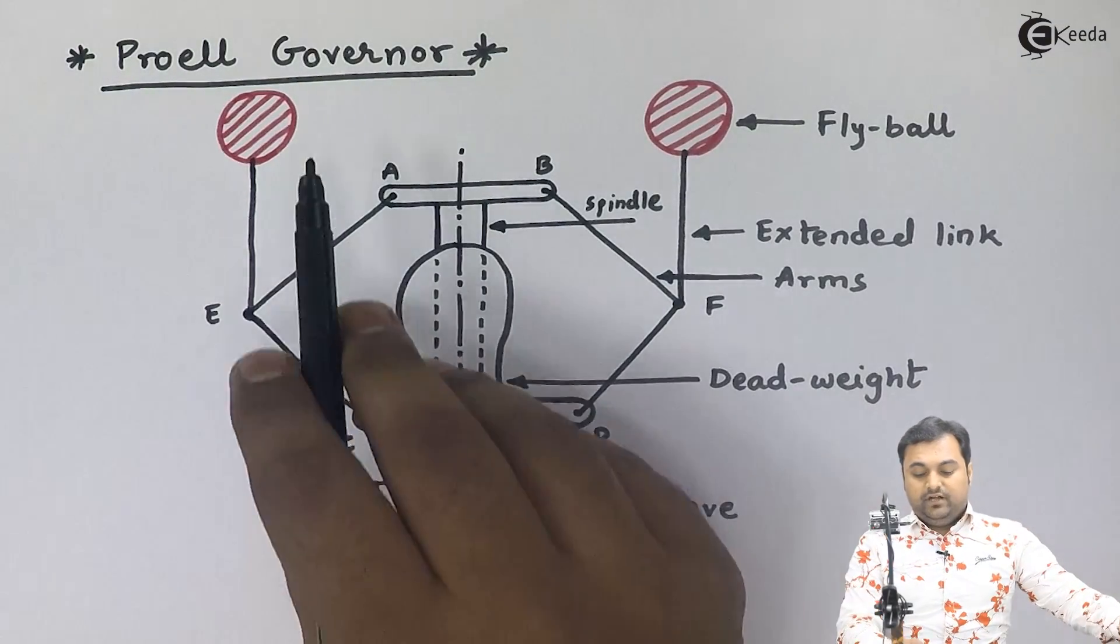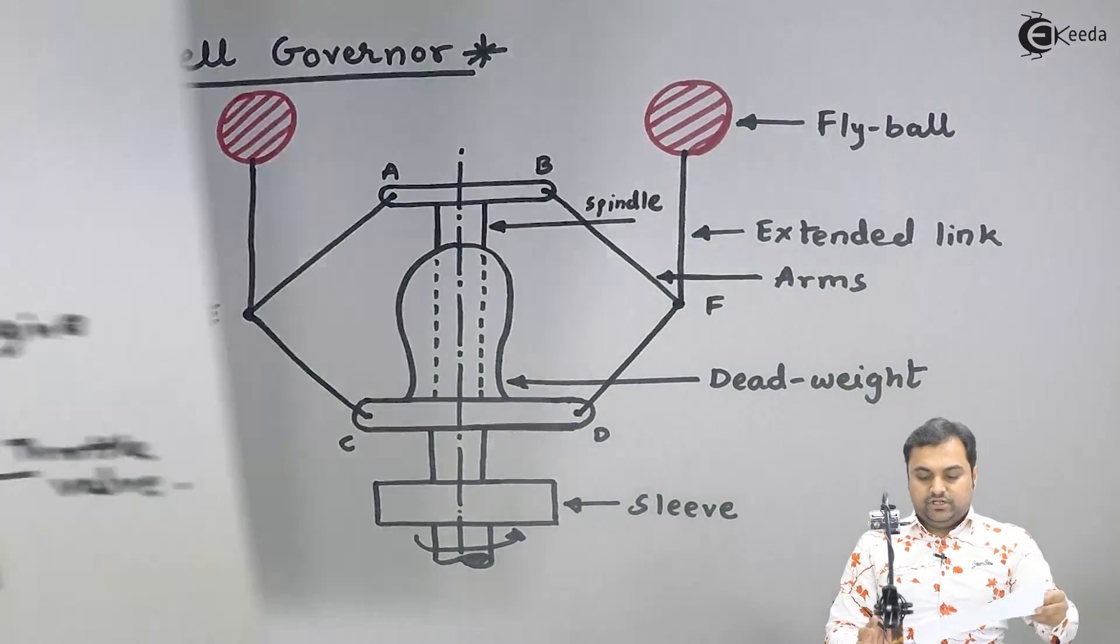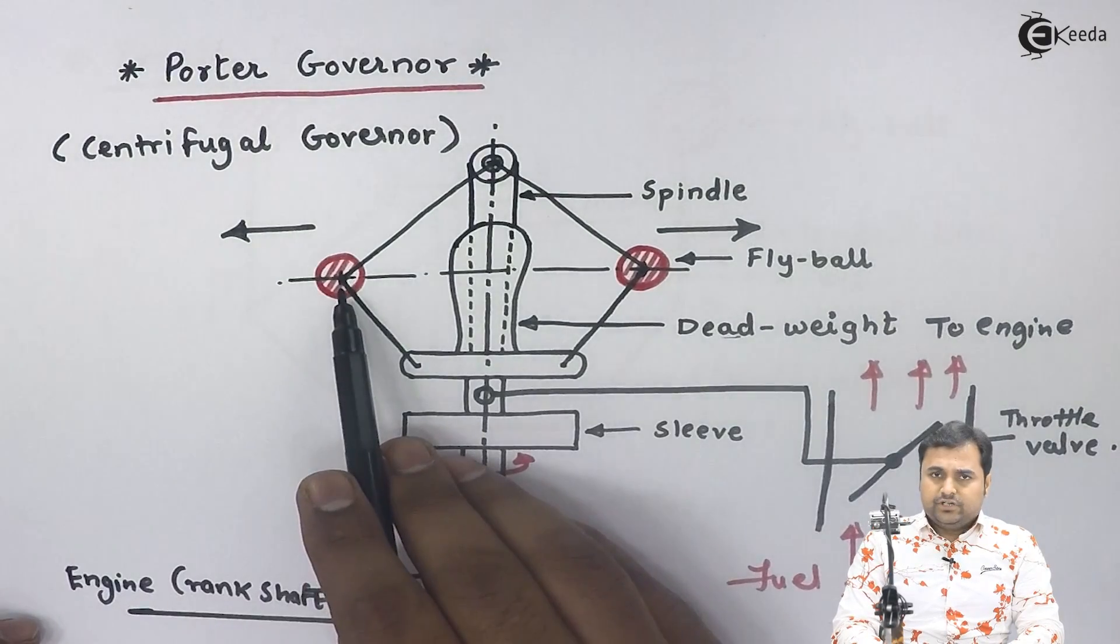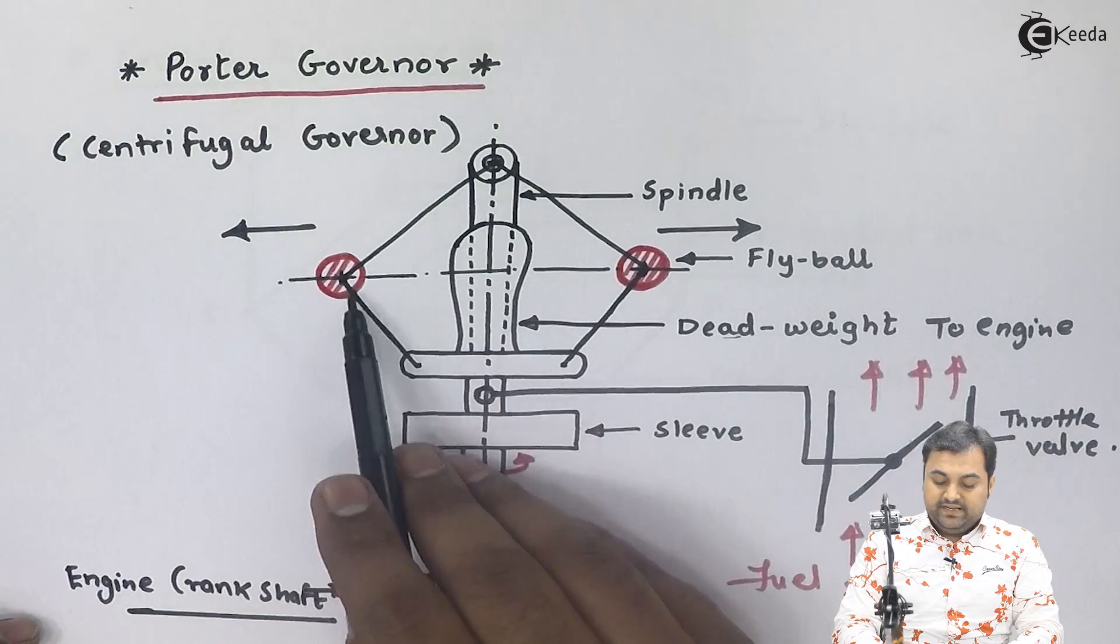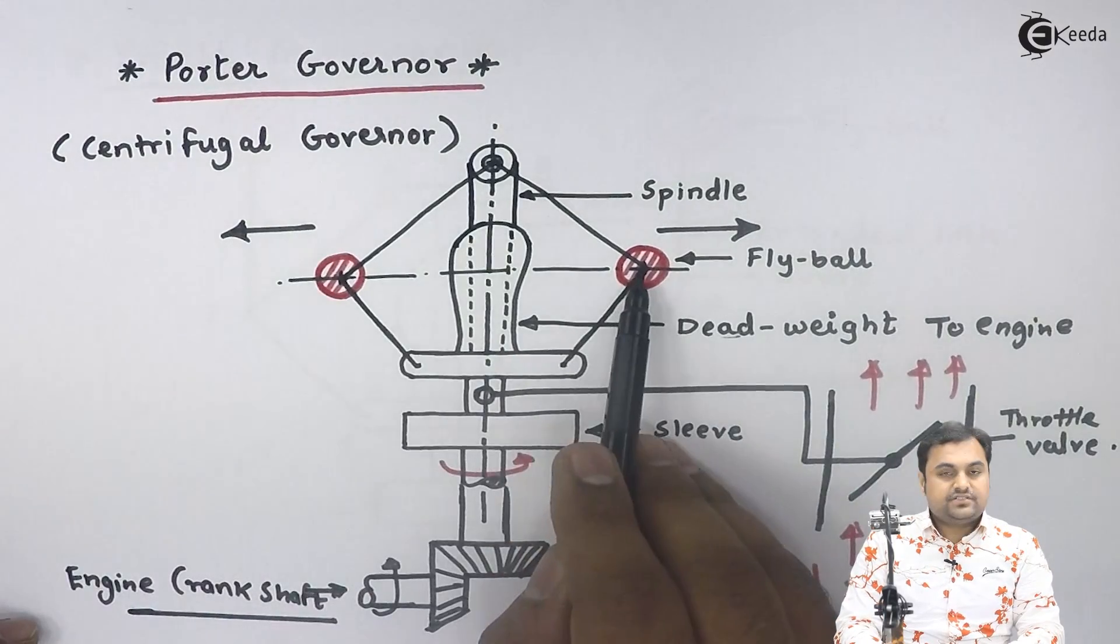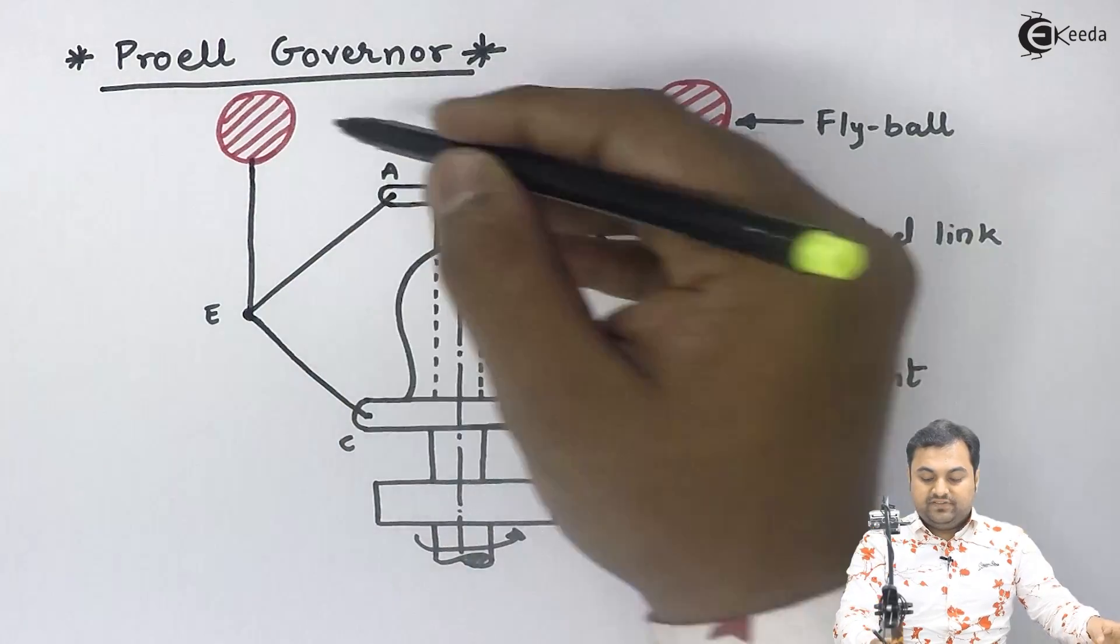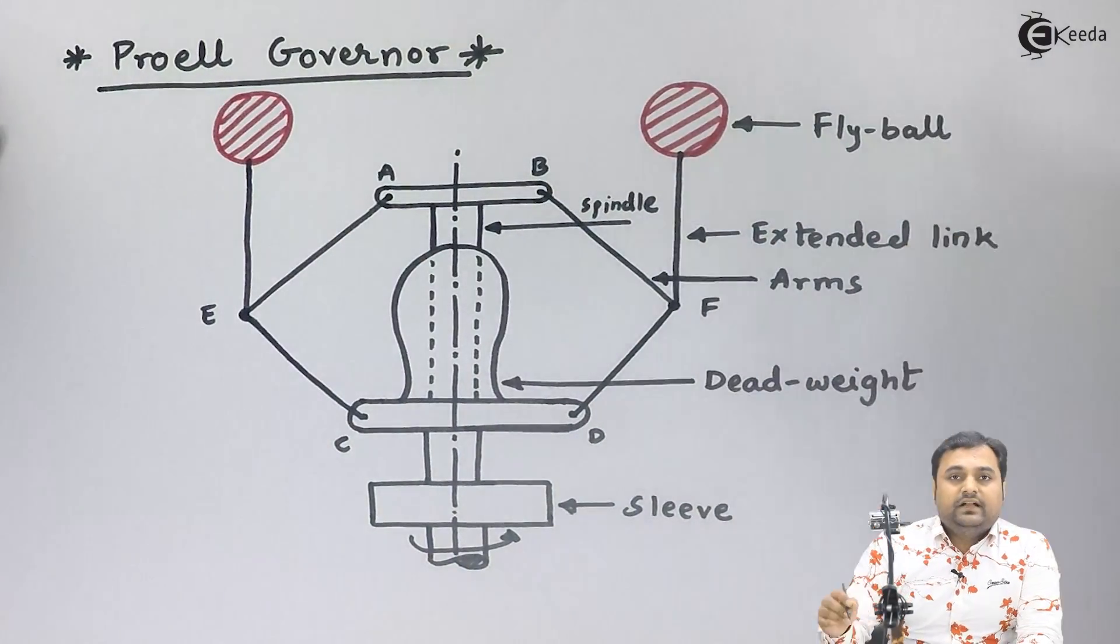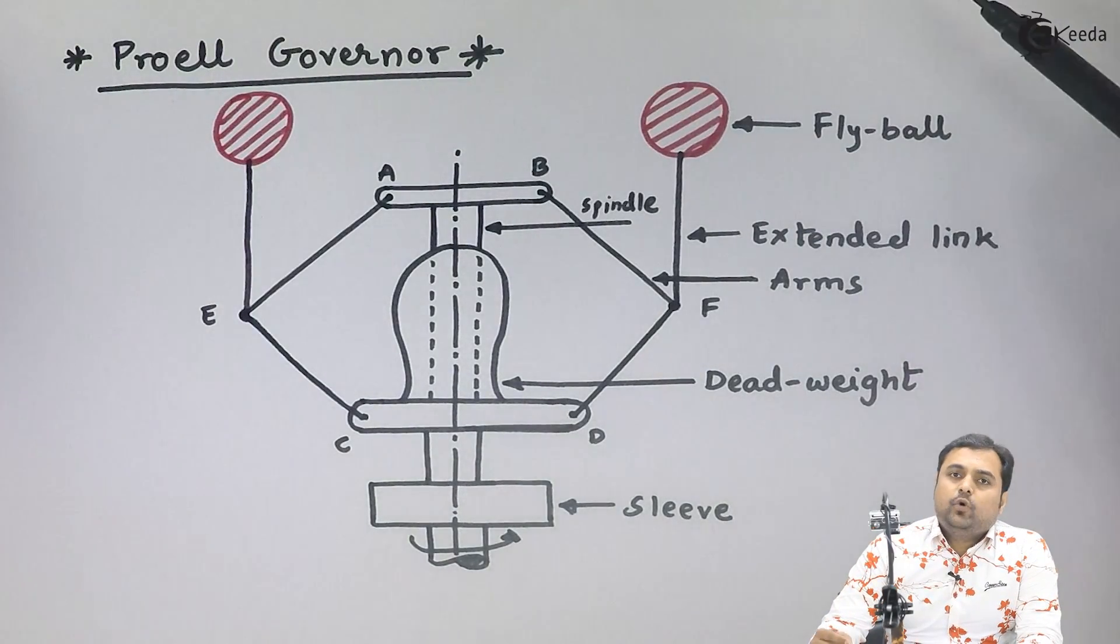When we compare Proell governor with Potter governor which we have seen just now, in Potter governor the fly balls were connected directly at the intersection of the links. Now in case of Proell governor, the fly ball is extended upwards.